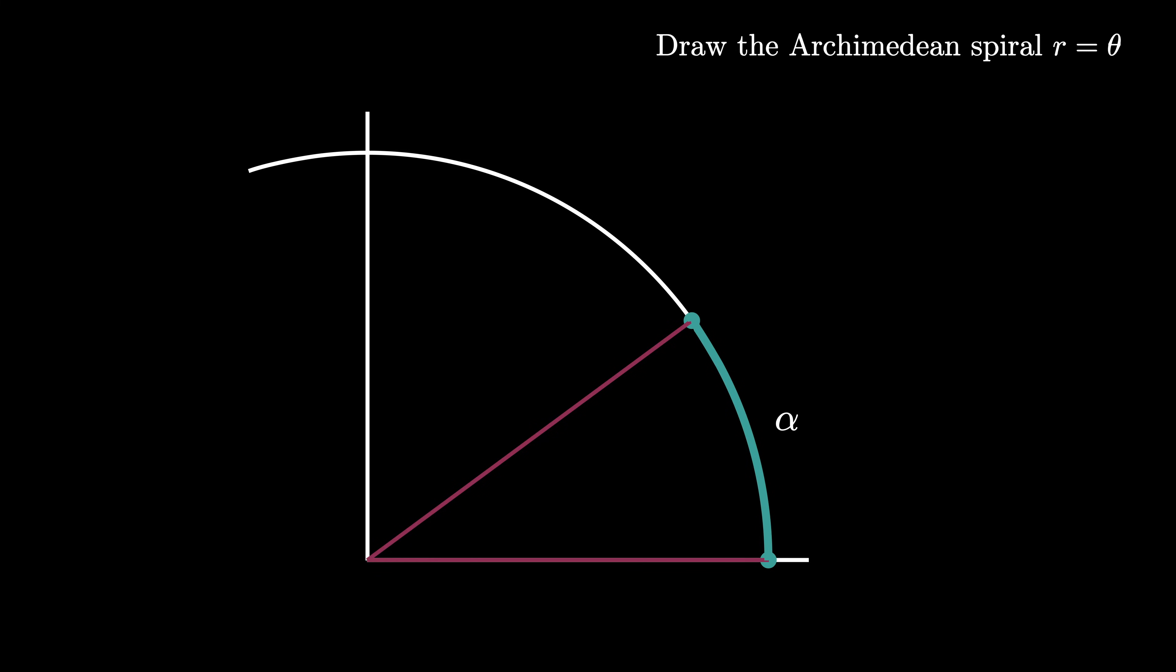Now let's draw the Archimedean spiral r equals theta. This intersects our top line at a point. Let's call the point P. Because P lies on the line created by angle alpha it has an angle of alpha, and because it lies on the Archimedean spiral it must create a radius of length alpha from the origin.